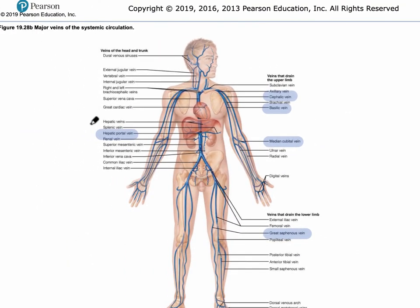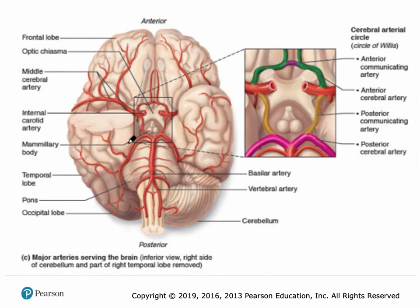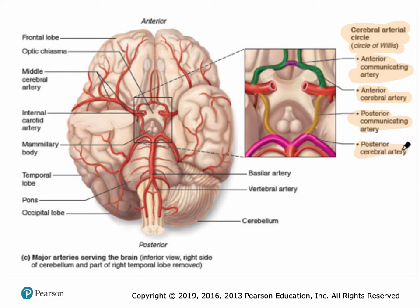The next slide shows an example of a common anastomosis. We have lots of anastomoses in the body, and they're more common in veins because there are always collaterals. This particular example is an arterial anastomosis referred to as the Circle of Willis, also called the cerebral arterial circle. It's made up of the anterior communicating artery, the anterior cerebral artery, the posterior communicating artery, the posterior cerebral artery, and the middle cerebral artery.